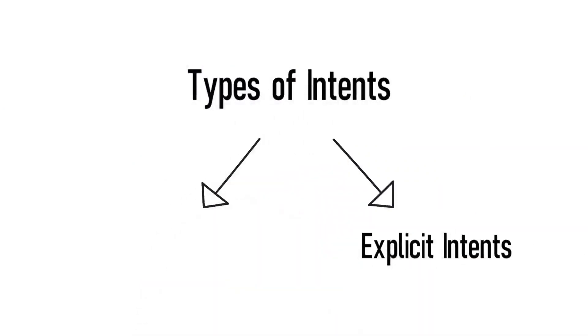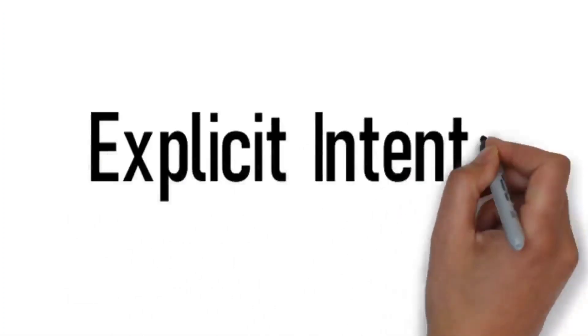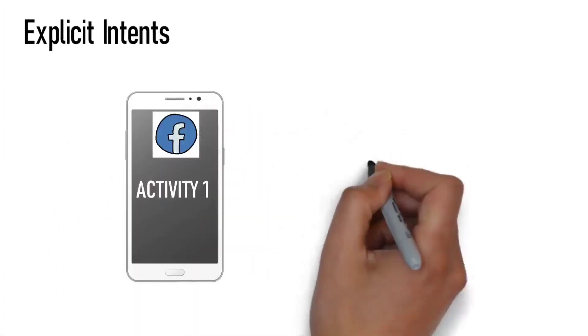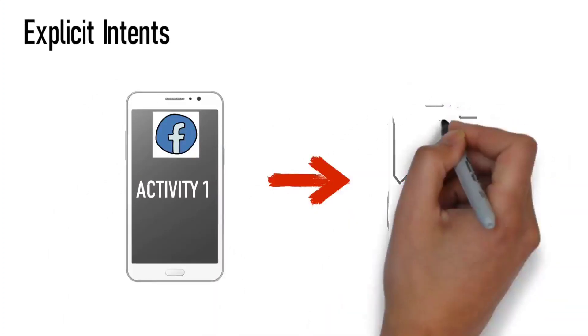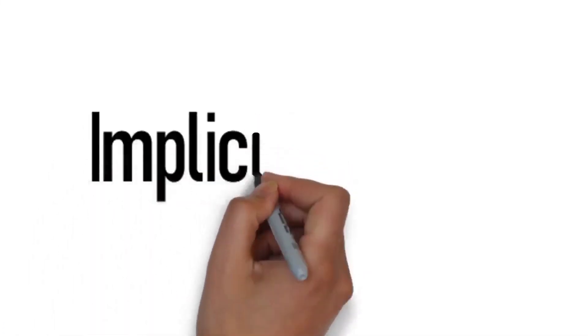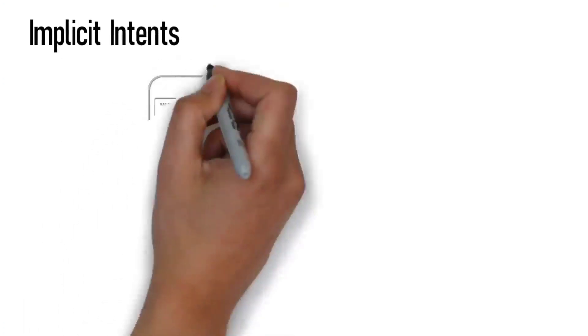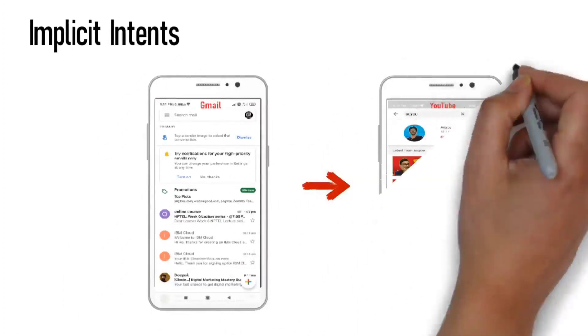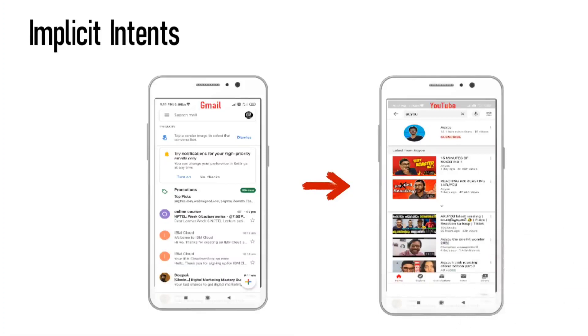There are two types of intents: explicit intents and implicit intents. Explicit intents are used within the same application — for example, in a Facebook application, navigating from the home page to the next activity. Implicit intents are used across different applications — for example, clicking a link in Gmail to open another application.